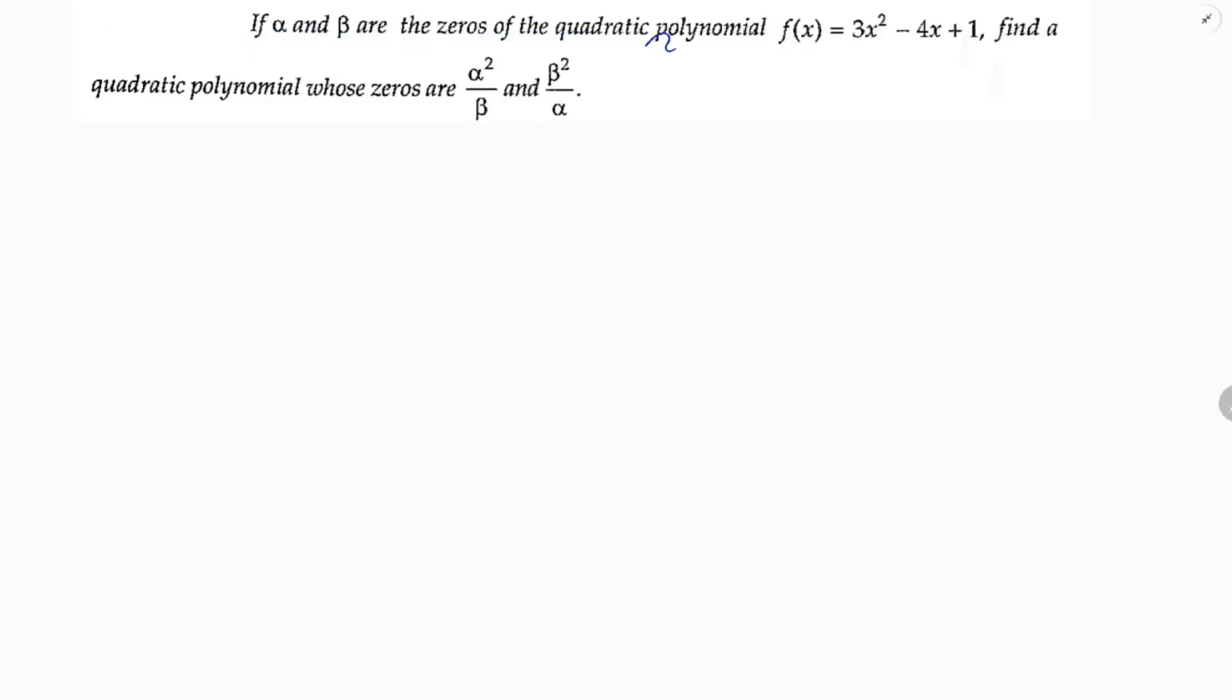If alpha and beta are the zeros of the quadratic polynomial, here the quadratic polynomial is 3x² - 4x + 1. So alpha and beta are the zeros of this polynomial, so you can directly find the zeros of the polynomial, first alpha and beta.